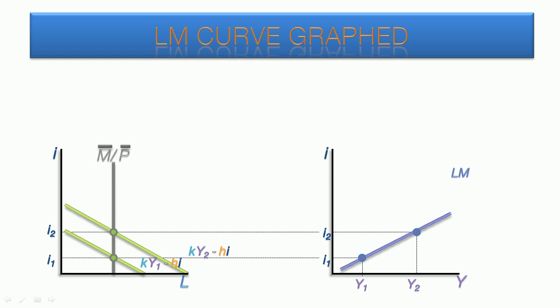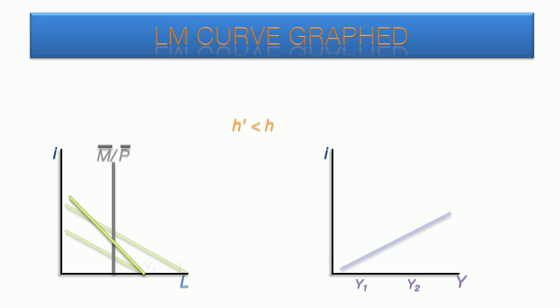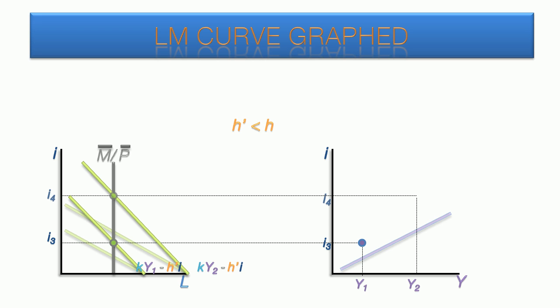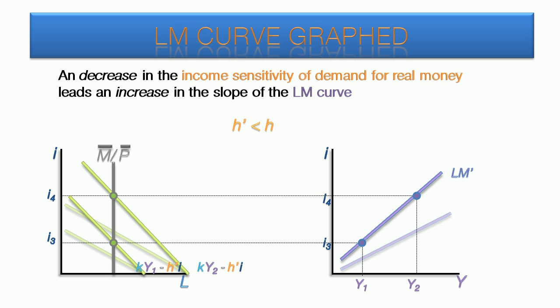In this example, the initial demand for money curves are relatively flat. We're going to decrease the income sensitivity of demand for real money. The curves produced with H prime indicate that it would take a relatively large decrease in the interest rate to produce a dramatic increase in the demand for money. When the lines are drawn across for both sample income levels, we see that the resulting LM curve slope has increased.